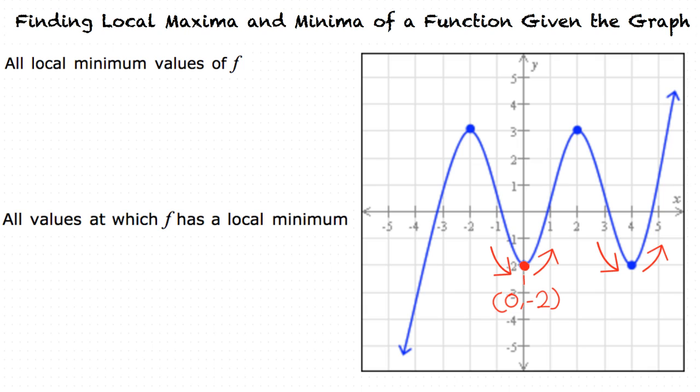Those points are (0, -2) and (4, -2). These are our local minimum points.